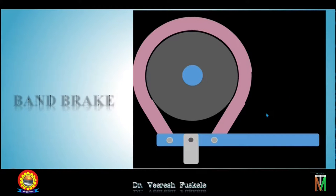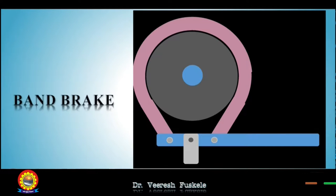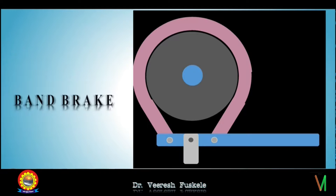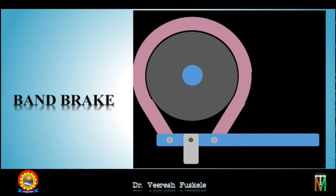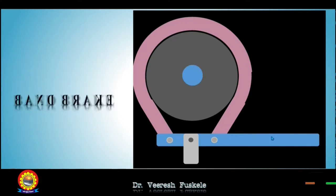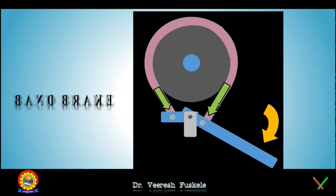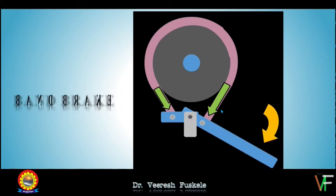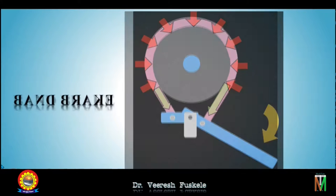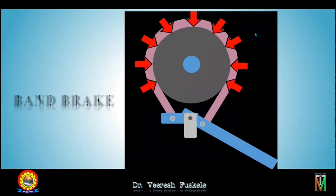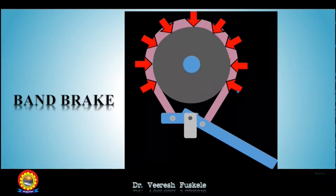A simple band brake will neither have self-energizing properties nor can it be self-locking. The force is applied in the downward direction on the lever; as it is pivoted, the band is pulled up and the brake is applied. The force is applied in the radial direction, which is why this is a radial brake.